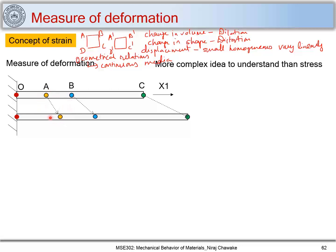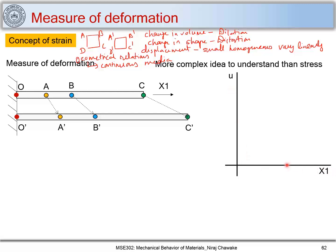Point A is displaced to a lower extent than point B, while point B has displaced less than point C. If we look closely, the displacements these points experience under this tensile stress vary linearly with respect to their positions from point O. Let me name the displaced positions as O dash, A dash, B dash, C dash, and plot displacements versus X1, marking O as the origin.